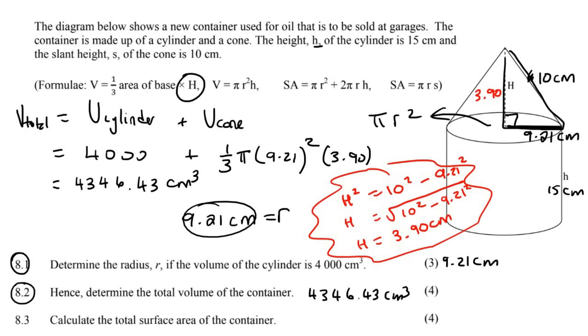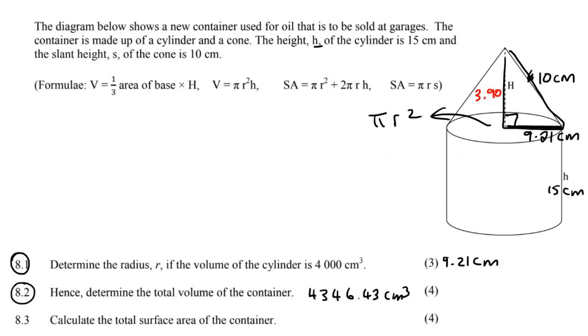This one says, the last one, calculate the total surface area of the container. Now, here's where you need to be more cautious. In this particular exam, they actually were very nice to the learners. These are actually modified formulas, and I'll explain why. You should understand that this is actually a modified cylinder, and then this is a modified cone. Let me explain what I mean.